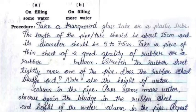Stretch the rubber sheet tightly over one end of the pipe. Does the rubber sheet bulge out? Note also the height of the water column in the pipe. Pour some more water and observe again the bulge in the rubber sheet and the height of the water column in the pipe.